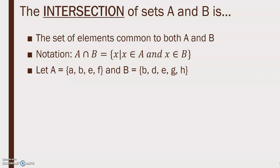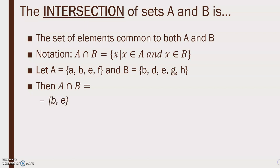We're going to let set A equal {A, B, E, F} and set B equal {B, D, E, G, H}. Then A intersect B equals the elements that are in both A and B. B and E are the elements that are in the intersection.